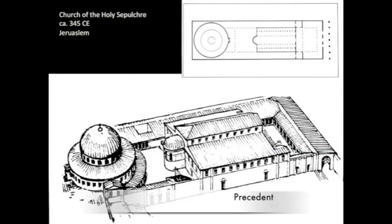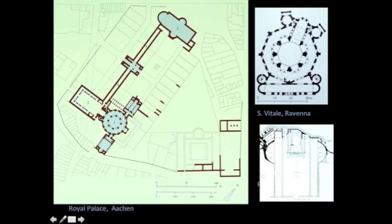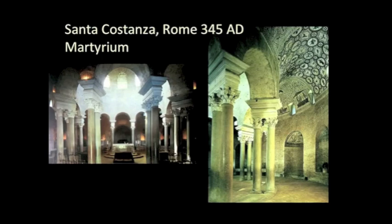Other precedents could also be considered — for example, the Church of the Holy Sepulchre in Jerusalem from 345, which may be the closest model. It's meant to be constructed on the place of Christ's tomb, with a really strong figural centralized building preceded by a courtyard. So the Carolingian copy gains richness by folding together all these different precedents: the Church of the Holy Sepulchre, the Roman Forum, and San Vitale in Ravenna — which was, when built, the capital of the Western Roman Empire.